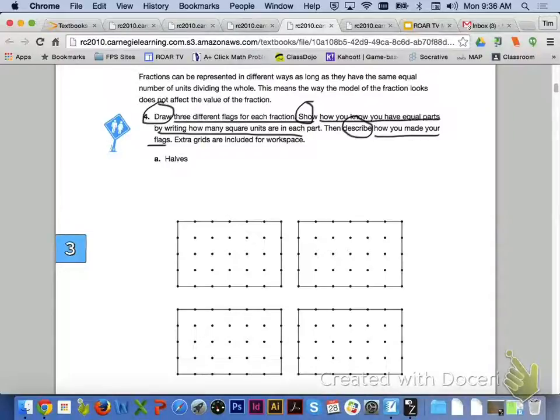For the pages to follow, you are going to be drawing three different flags for each fraction. You need to show how you know you have equal parts by writing how many square units are in each part. And finally, you have to describe how you made your flags. Extra grids are included for workspace if you need any additional room. You're starting letter A with halves, and on the pages to follow, you will have thirds, fourths, sixths, eighths, and finally twelfths to finish up on page 105.